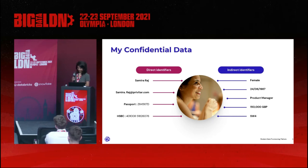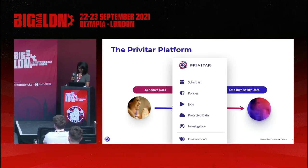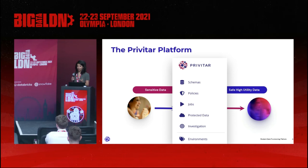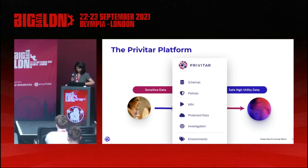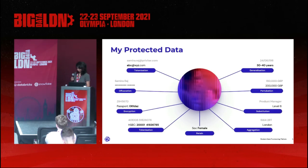It's important to make this distinction because you need different types of transformations to protect different types of data. This is where Privatar comes in. Our platform is designed to support a wide variety of techniques so you can find exactly the right transform to end up with safe data for your analysis. We use four key concepts: schemas, which describe data; policies, which describe actions needed to make data safe; jobs, which apply transforms to your IT system; and PDDs, which are containers that help you retain control over your protected data.